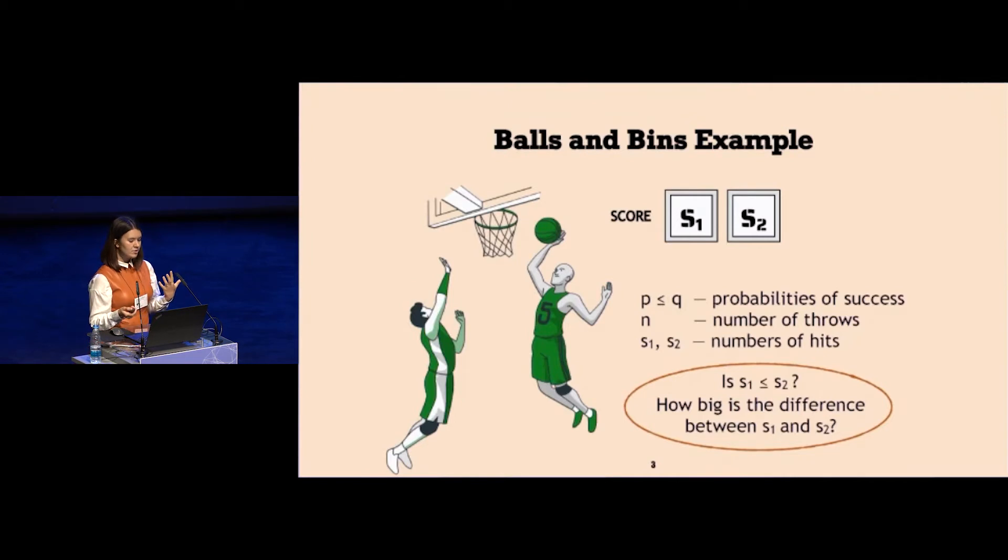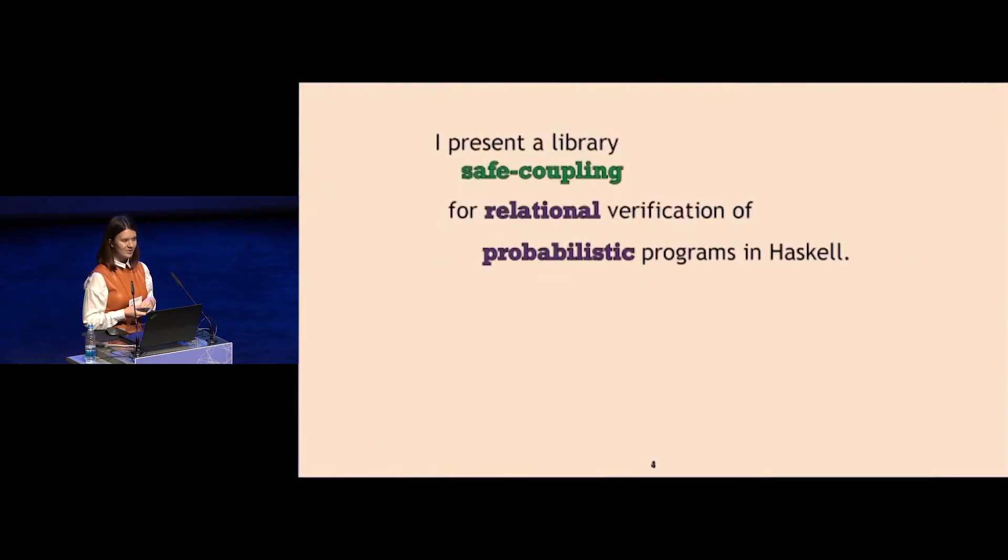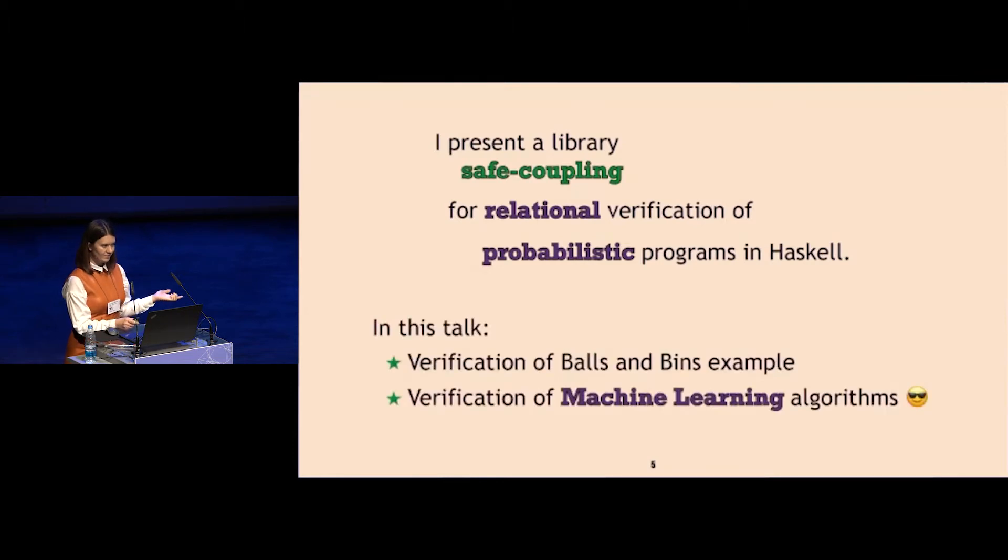This sort of question can be called a relational question, and the possible pairs here are the illustration of a probabilistic process. In this talk, I'm going to present a library for verification of probabilistic programs in Haskell, which I do in relational style, and I also do it using Haskell itself. I continue with the balls and bins example to show you the example of verification using the coupling, and then I explain how we use this library for more real world examples from machine learning.